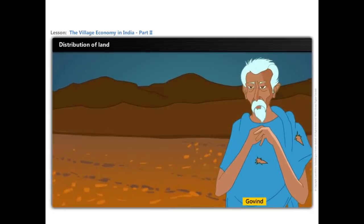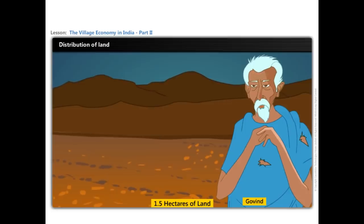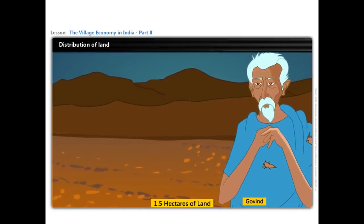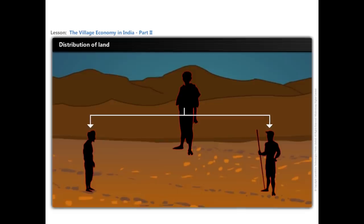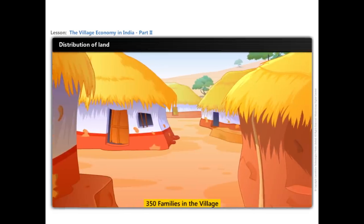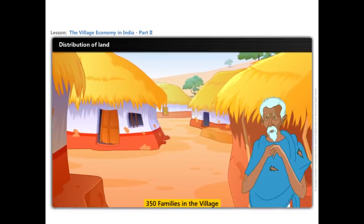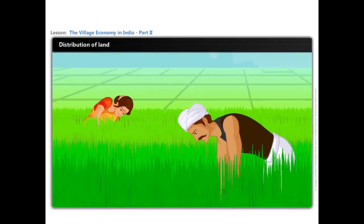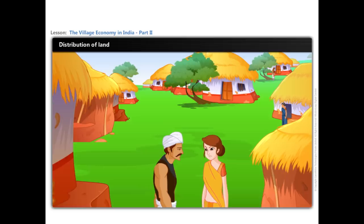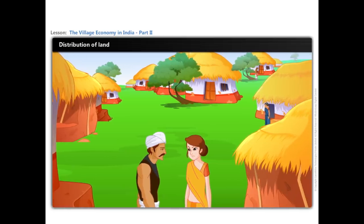This is Govind, who has 1.5 hectares of unirrigated land and has to work hard with his two sons to earn his livelihood. There are another 350 families like Govind in the village. Ramu and Rukmi are farm labourers who have been working for Deen Dayal for the last 10 years. There are another 50 families like Ramu and Rukmi in the village.